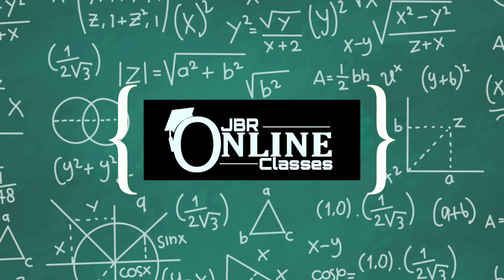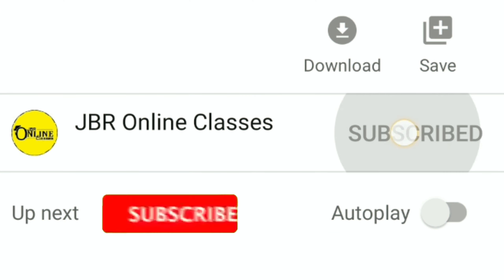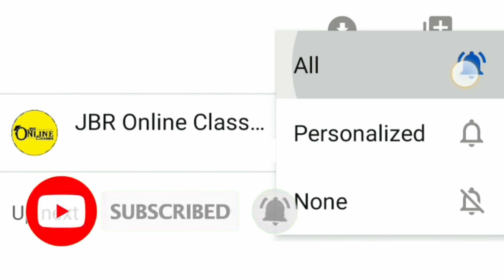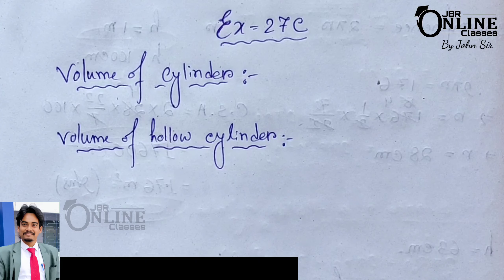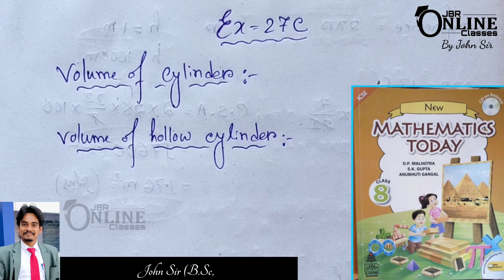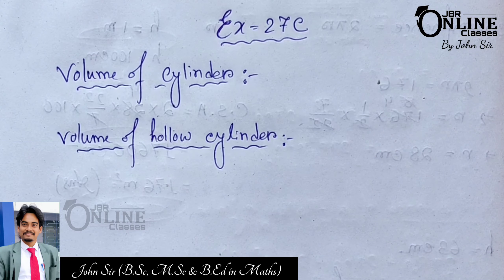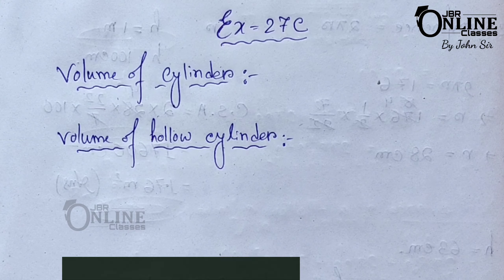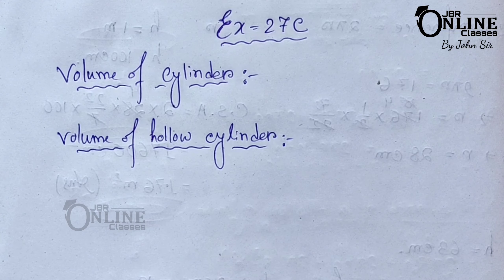Welcome back to my channel JBR Online Classes. Please subscribe and press the bell icon. Hello everyone, today I'm going to start Exercise 27C — it's volume of a cylinder. The radius of a cylinder is small r and the height of the cylinder is h.